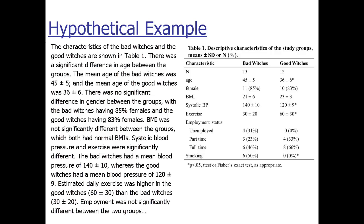Here's the kind of typical thing I'll get from students. The results section will say: 'The characteristics of the bad witches and the good witches are shown in table one.' Notice we've got passive voice there — you should at least say 'table one shows the characteristics.' You may not even need to tell the reader what table one does, because it's pretty obvious. You might just jump right in with the findings and put table one in parentheses in the first sentence.